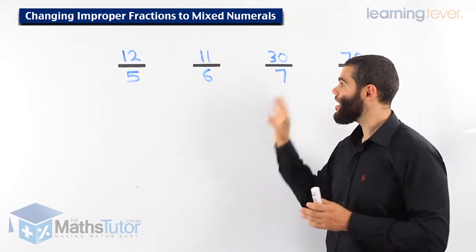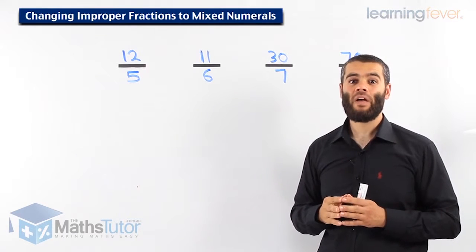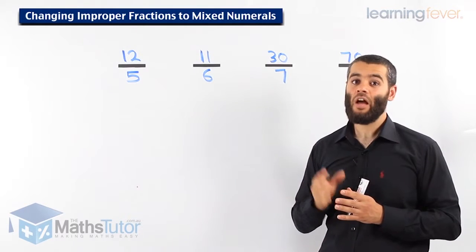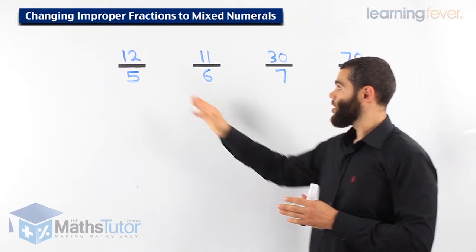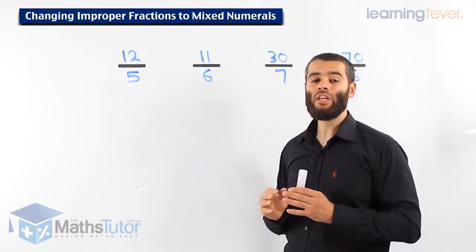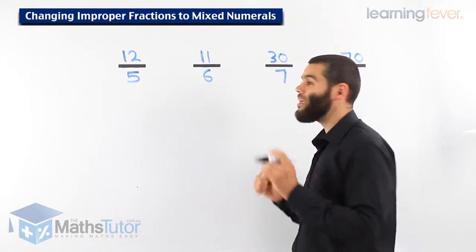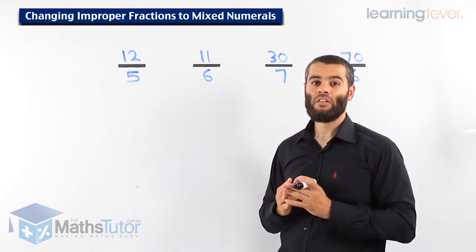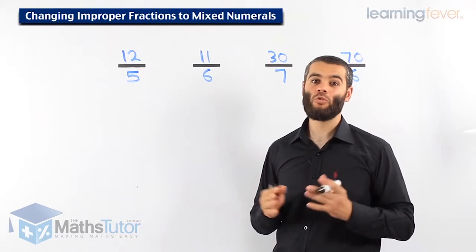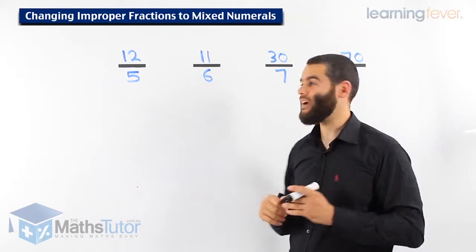So now that they are written in improper form, we can actually write them as mixed numerals. I'll show you how. Mixed meaning it is going to have a whole number and a fraction — that's why it's called mixed.